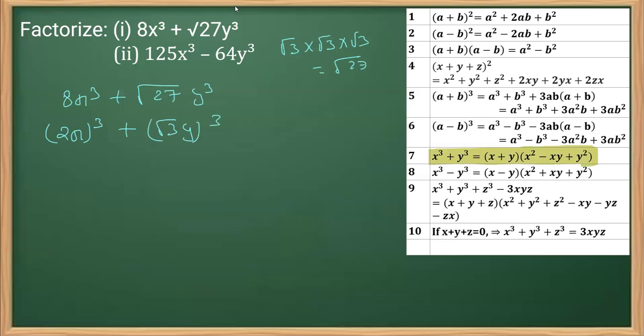Now once we got this, what is x and y for us? Then we will apply this identity. That identity says that it should be x plus y, where x for us is this and y for us is this.